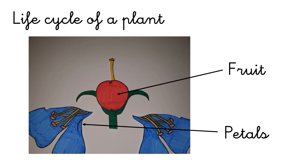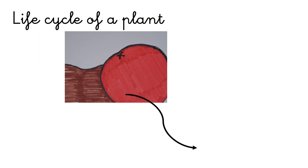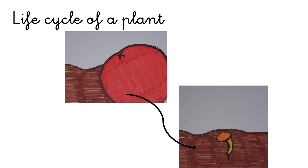The petals fall off, the fruit falls to the ground, opens and releases the seed. The seed into the ground germinates and a new plant grows.